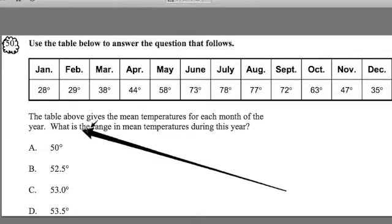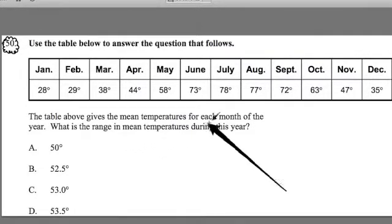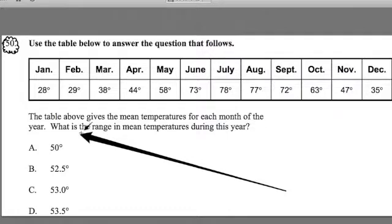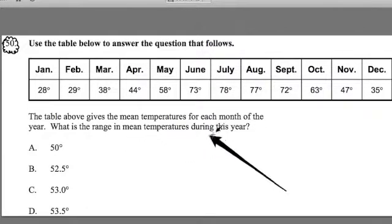It says the table above gives the mean temperature for each month of the year. What is the range in mean temperatures during this year? We have these two words here. We have mean and we have range. And I want to make sure we're really clear on the difference between mean temperature and the range in the mean temperatures.